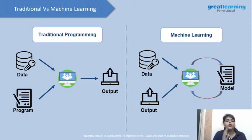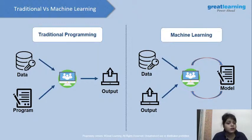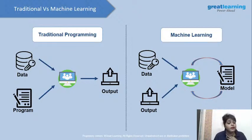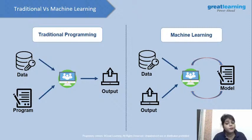Now let's look at the difference between traditional programming and machine learning. In traditional programming, you give data, do programming, and get output — simple as that. In machine learning, you give data, build a model using algorithms, and get output. But the key difference is: when you give new data the second time, you don't need to rewrite code. Your model is already trained — it's efficient enough to work like a human, though not perfectly. In most cases you'll get around 98–99% accuracy from your model.